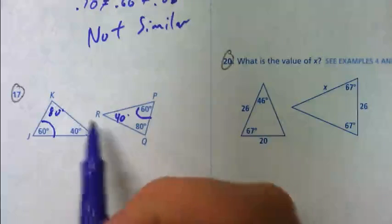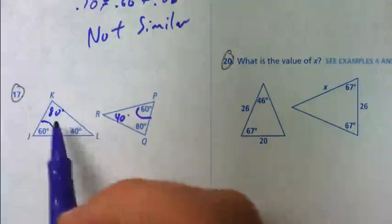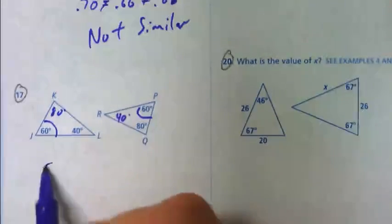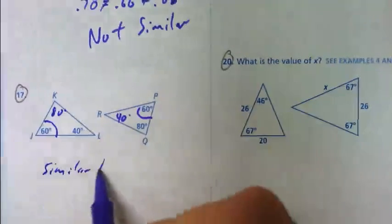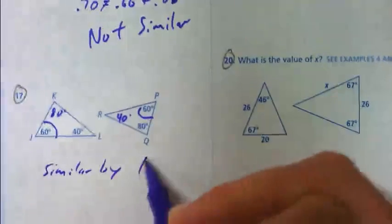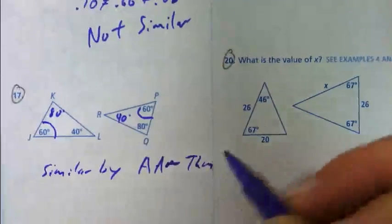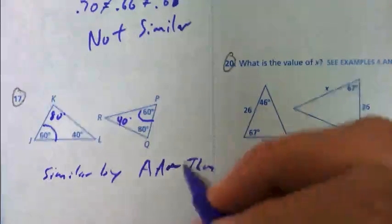So, again, since once you solve for that other missing angle, they are congruent, that means that we can say that these are similar by what? By AA similarity theorem.